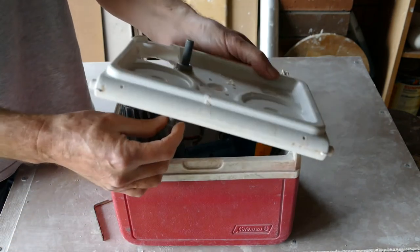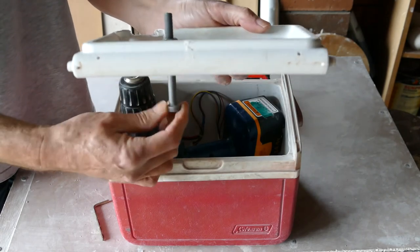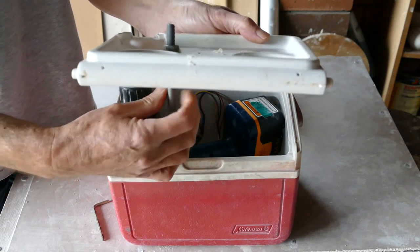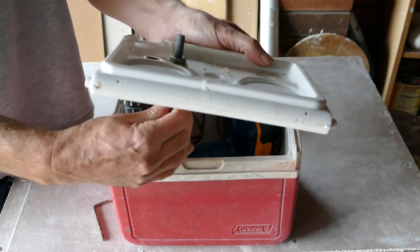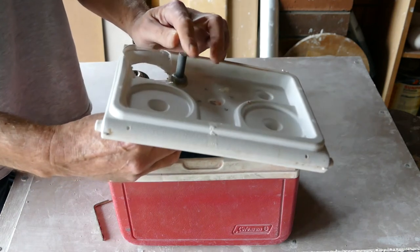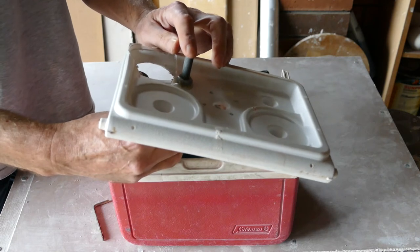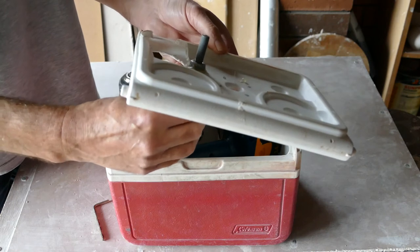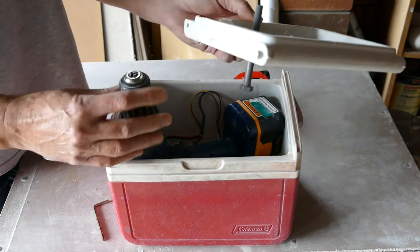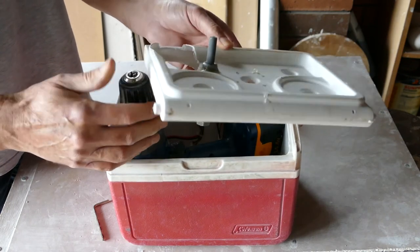And then the speed controller is actually a threaded bolt. Now the bolt, as you unscrew the bolt, it moves out. Screwed up it moves in. And that pushes up, the end of that pushes up against the trigger of the drill. So the further it's screwed in, the more it pushes on the trigger, and the faster the turntable runs.